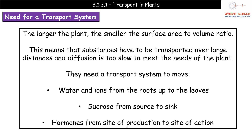Plants need this transport system to move water and ions from the roots up to the leaves, to move sucrose from source to sink, and also to move hormones from the site where they're produced to the site where they have their action. So there are three different requirements for the transport system.